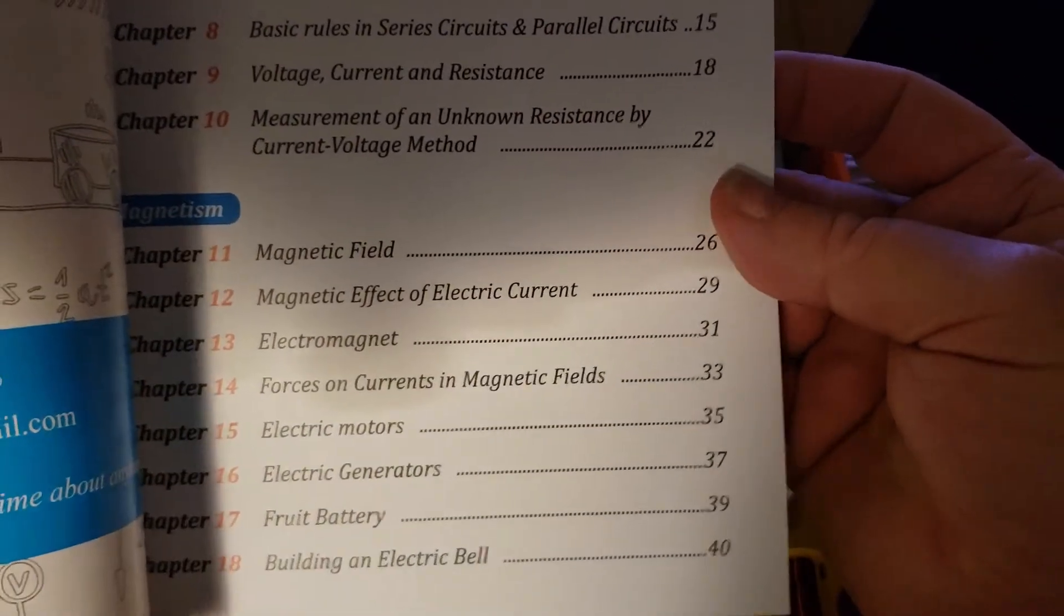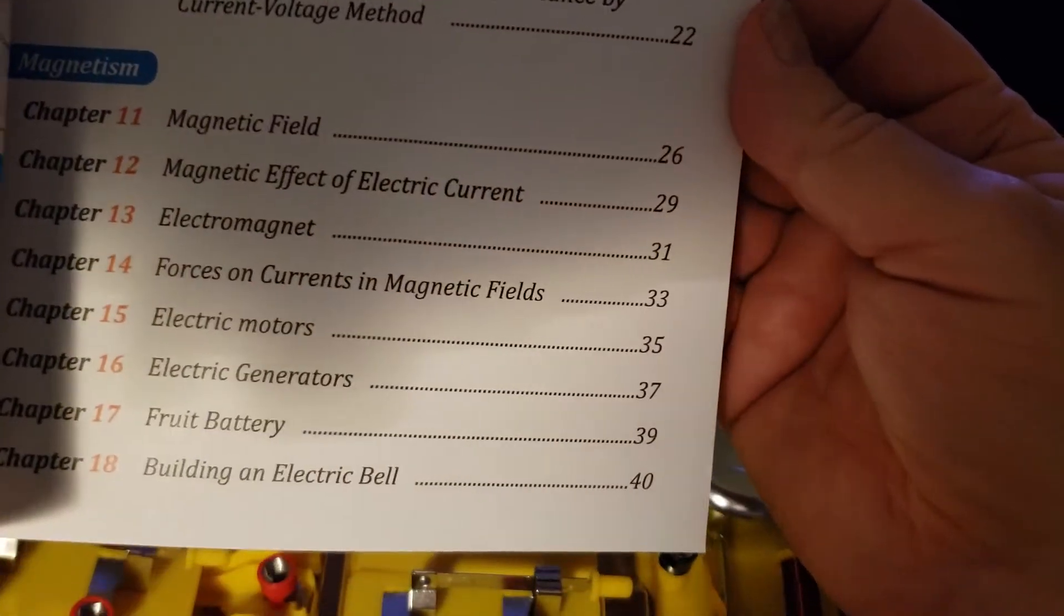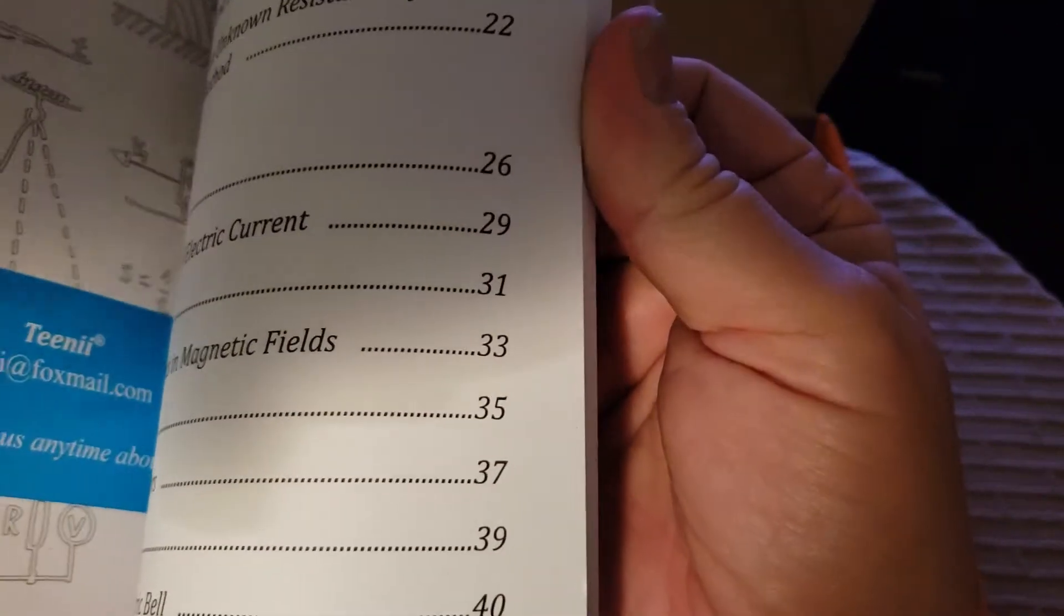There's also motors, perennial fruit battery, and electric bell with a solenoid.